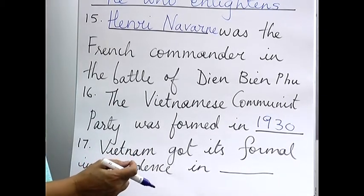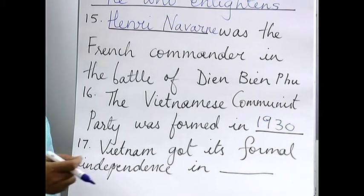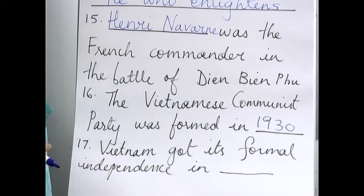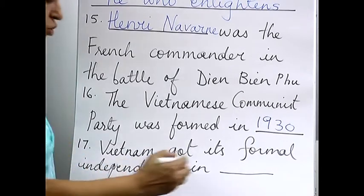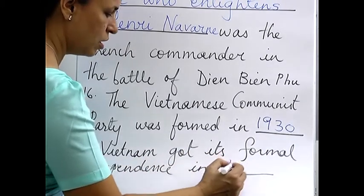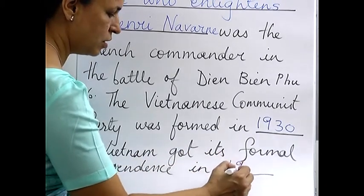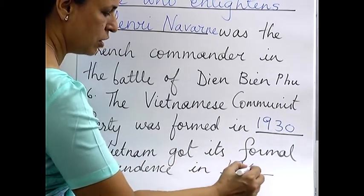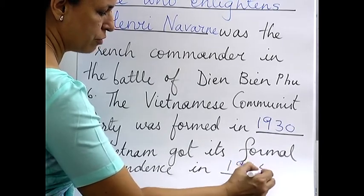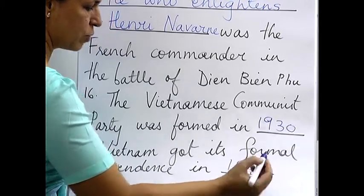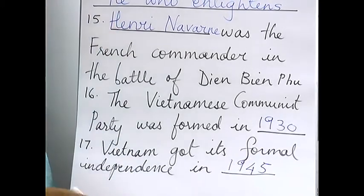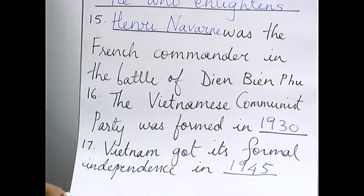Seventeenth: Vietnam got its formal independence in 1945. That was when it got its formal independence.